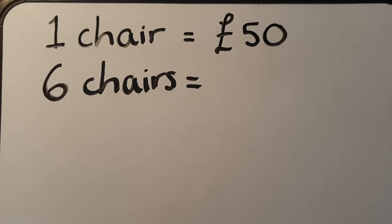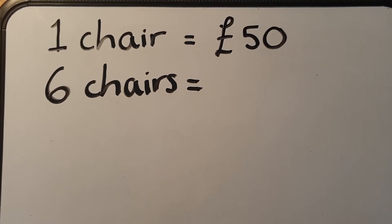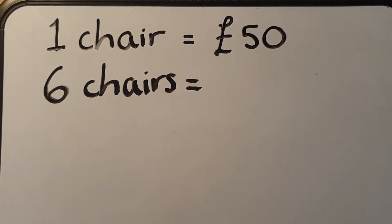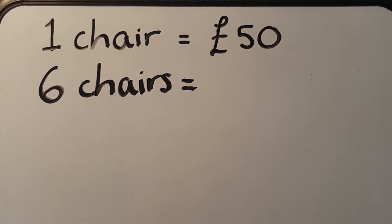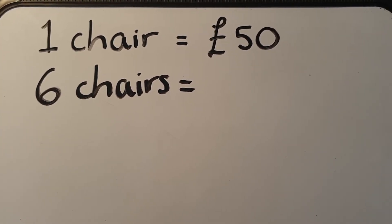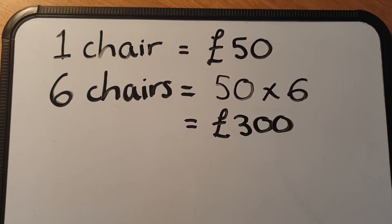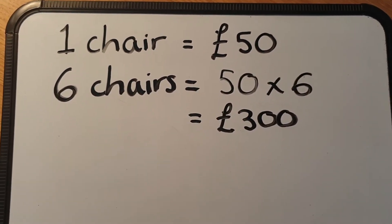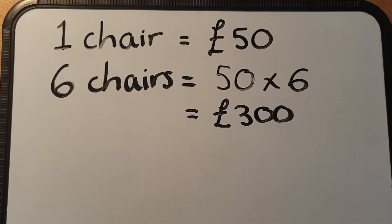In this example we know one chair costs fifty pounds and we're trying to find the cost of six chairs. So if they're in direct proportion, all we would do is multiply our fifty by six. So six chairs would cost three hundred pounds.